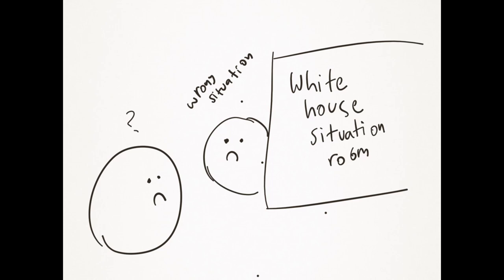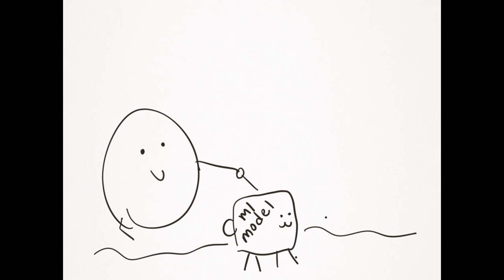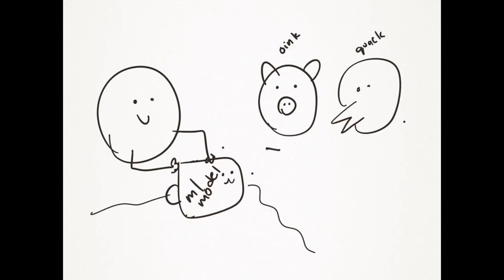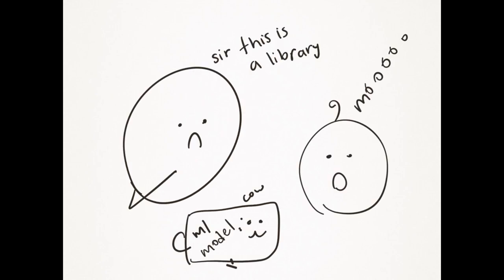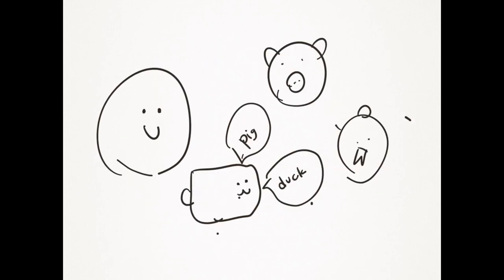But before we get into what MMOE is, let's talk about a simple situation. Let's say you have a model that tells you what animal you're looking at. And let's say you take the model to a park and give it a pat on the back or something. And you show it a pig or a duck or any animal that a two-year-old would imitate in public. It works perfectly aside from the occasional misread.